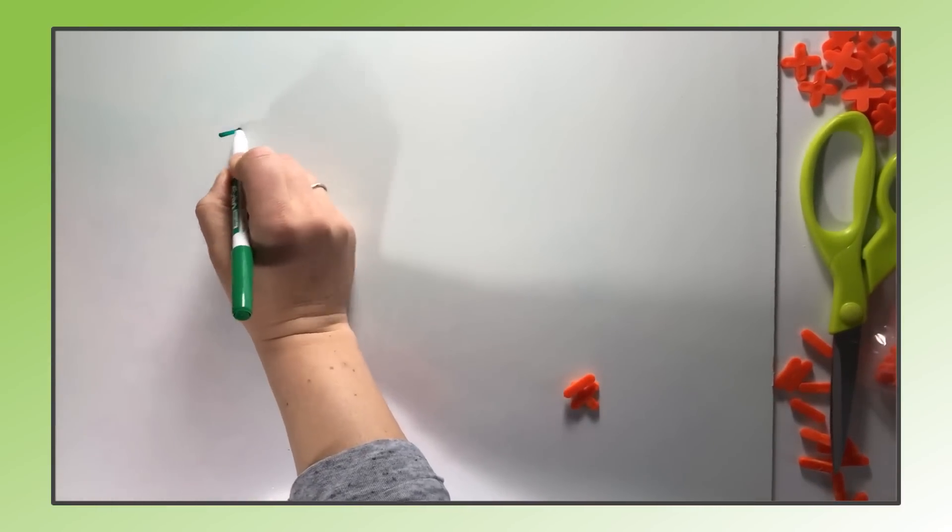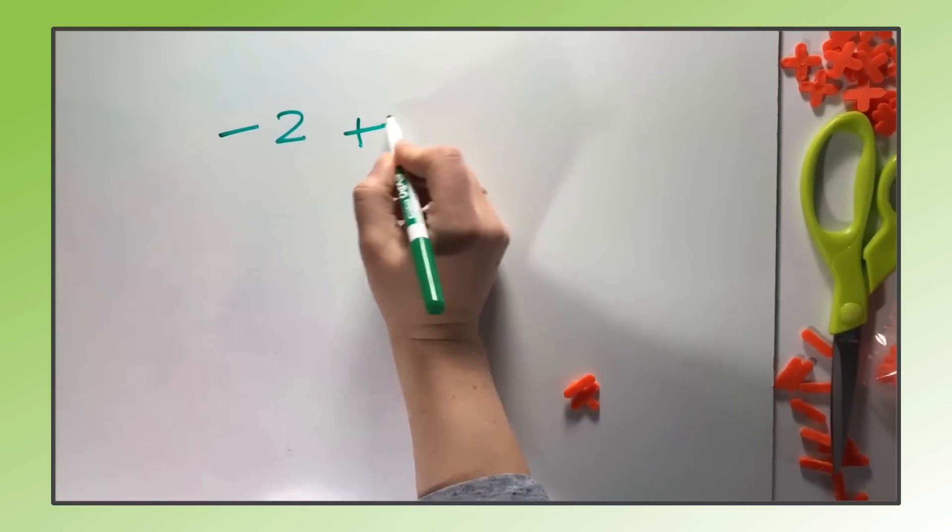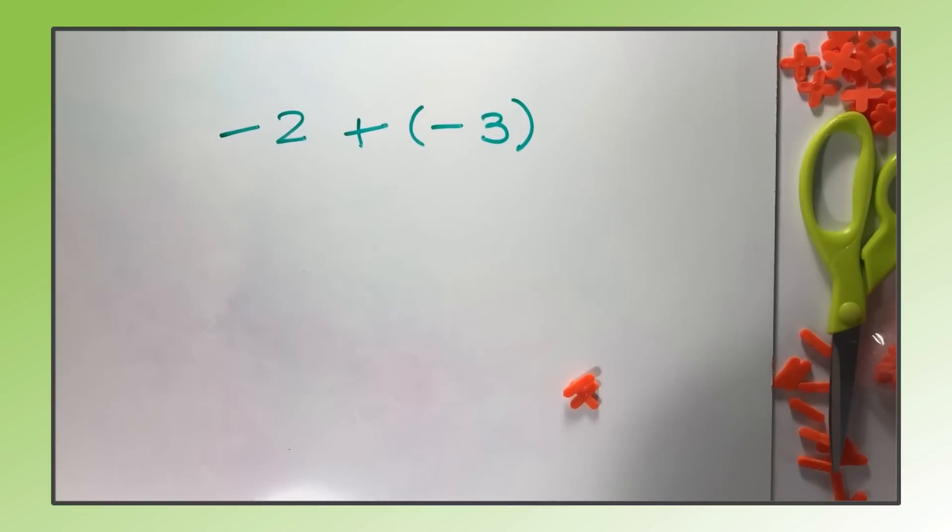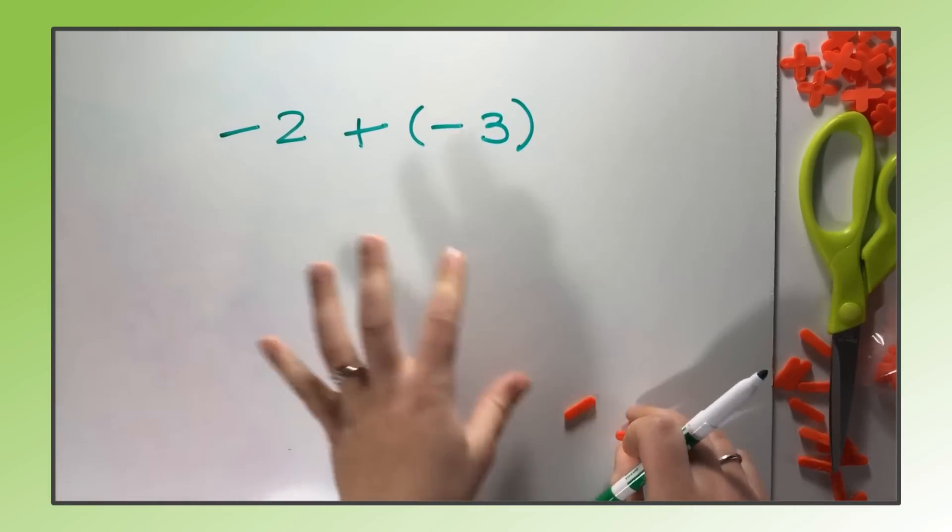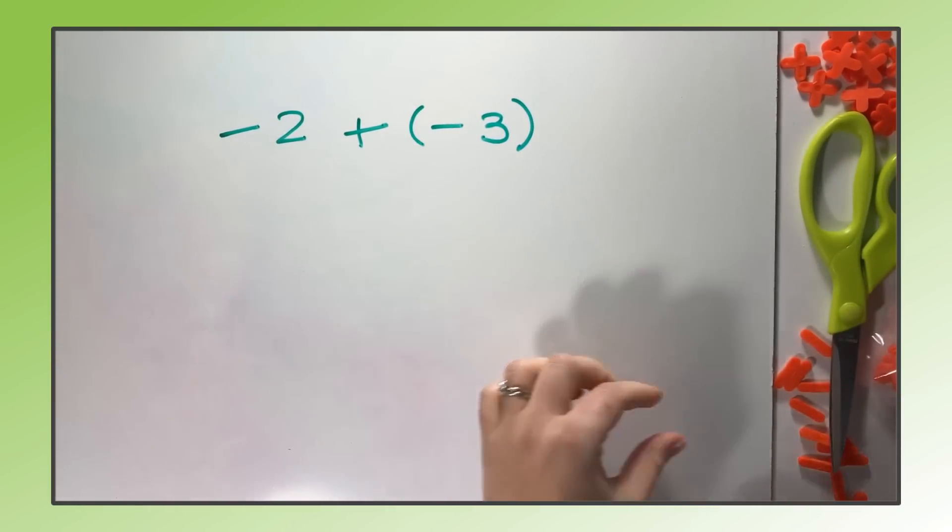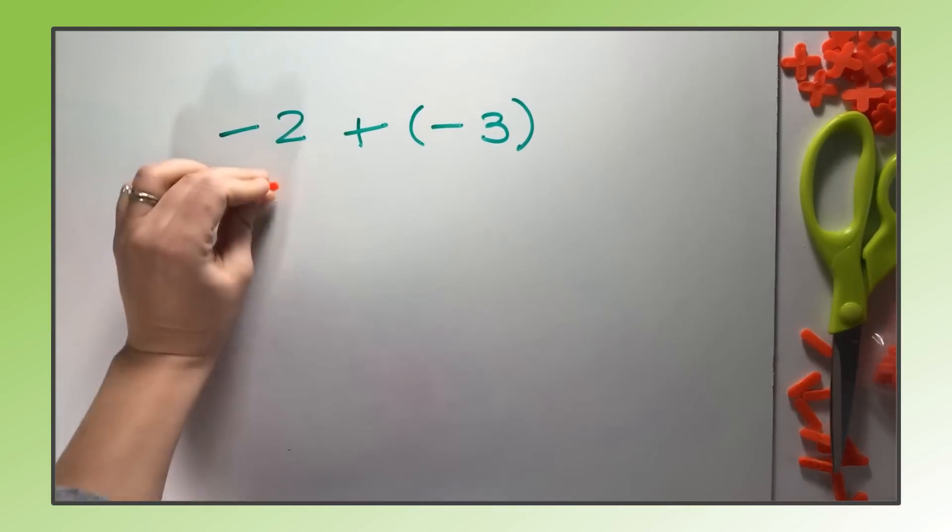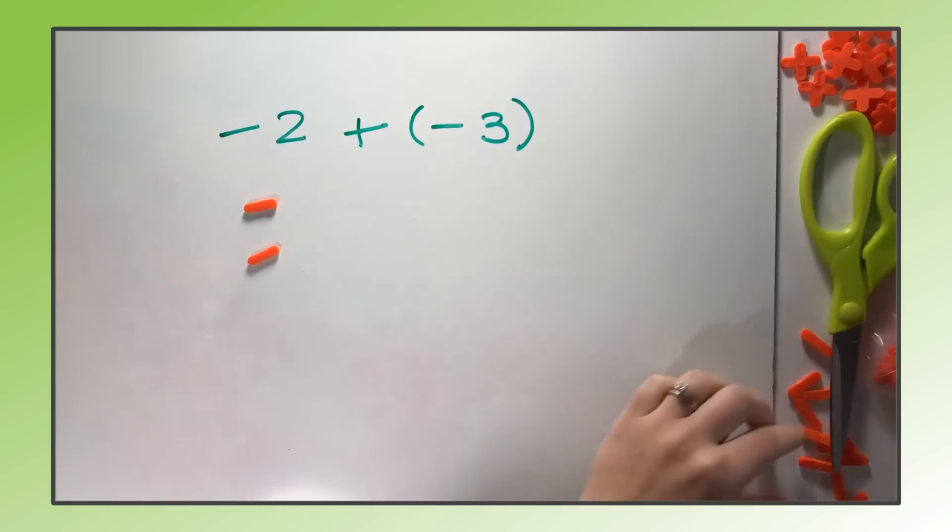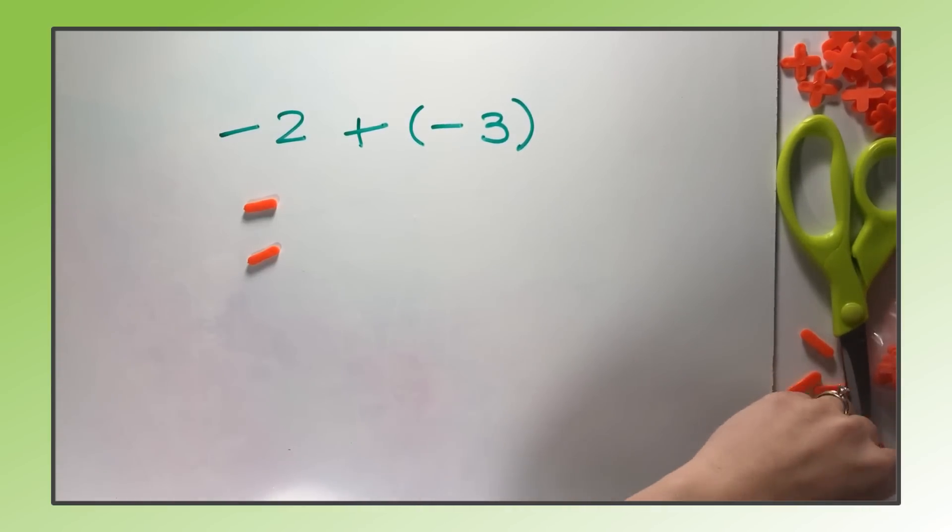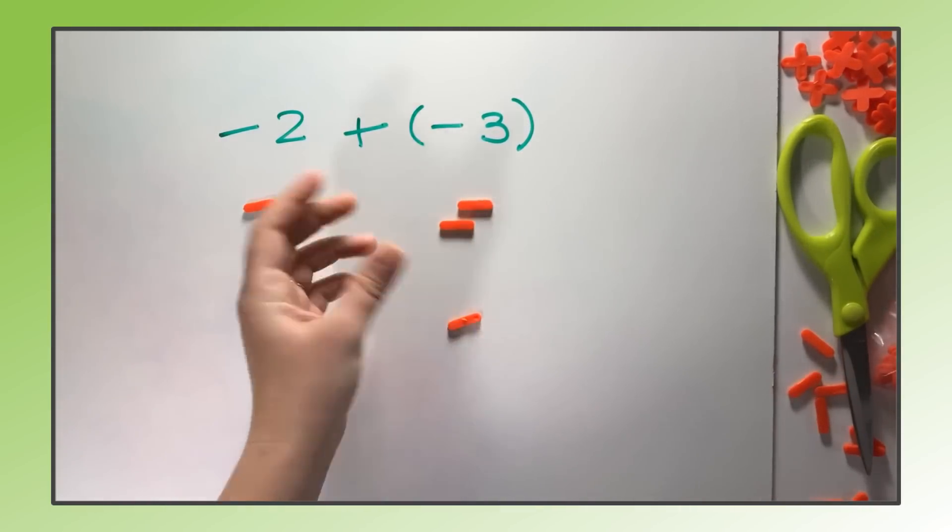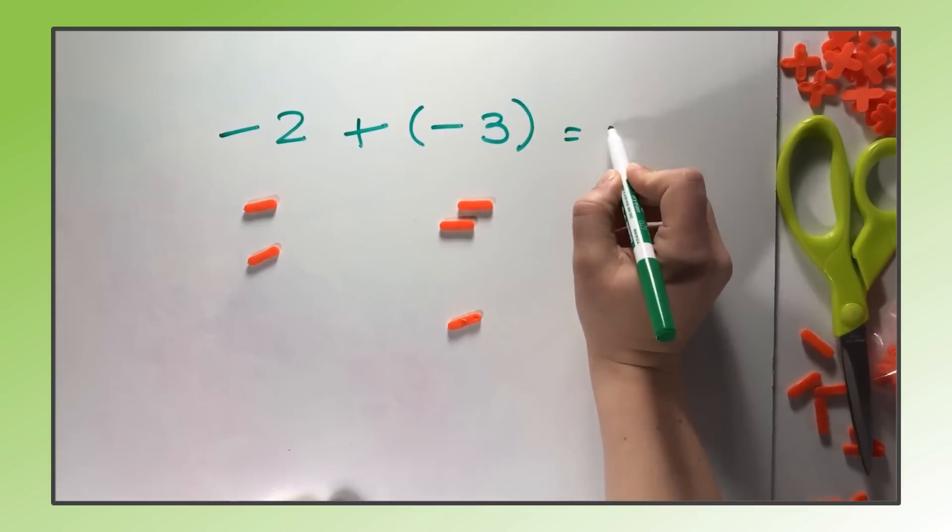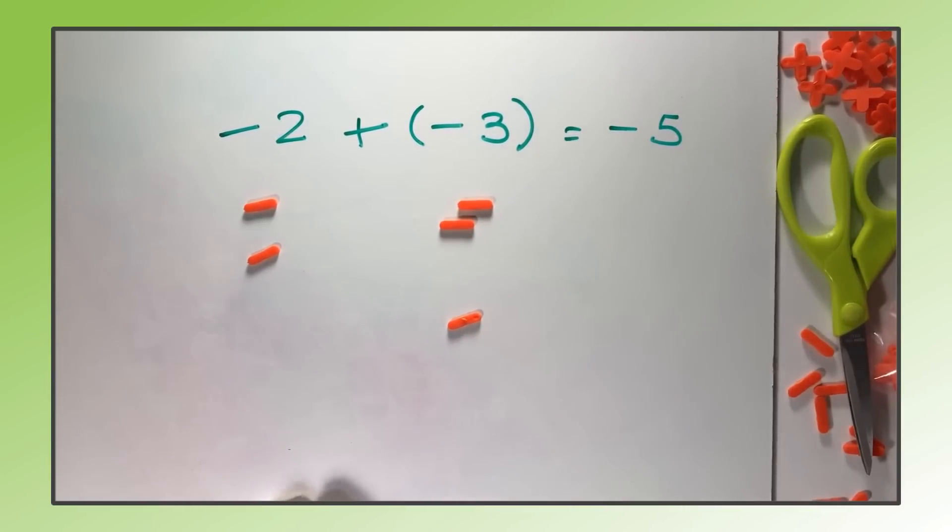Try something like negative two plus negative three, all together as a group, so they can see how this works. The same sign is going to look obvious at first, but that's how they get the hang of this. Negative two is two minus signs, because each one represents one. Negative three is going to be three of them. Then they figure out the final answer. We just count them up: one, two, three, four, five - all negative. The answer is going to be negative five.